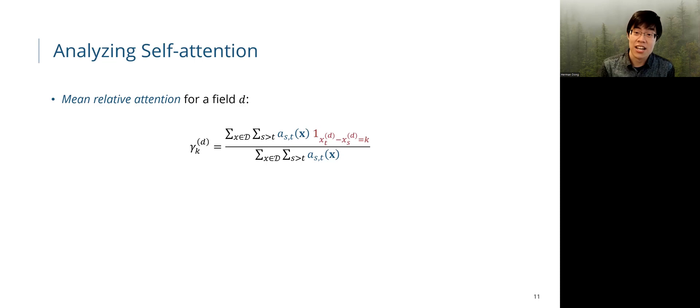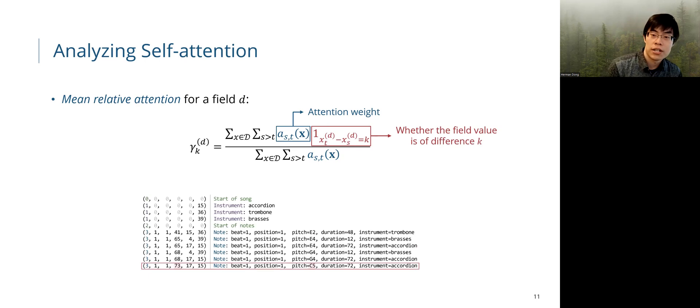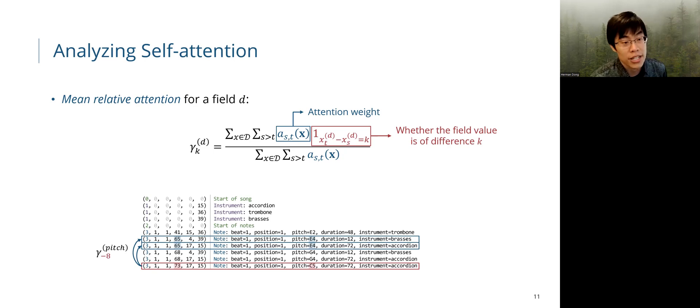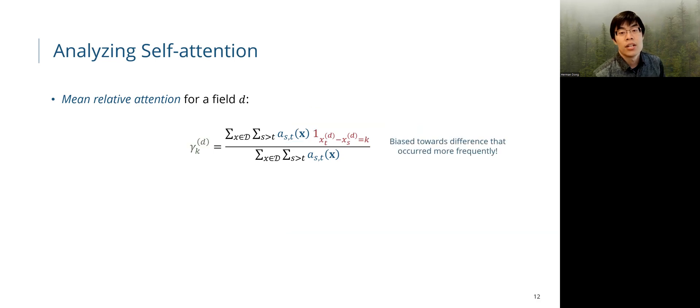We conduct a systematic analysis on musical self-attention. We propose a new quantity as defined here. Intuitively, it computes the ratio of attention weights assigned to events that has a field value of difference k over the sum of all attention weights. For example, for the pitch field, these two attention weights will be accumulated into gamma minus 8, since their pitch difference is minus 8. On the other hand, these two attention weights will be accumulated into gamma minus 5.